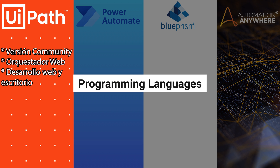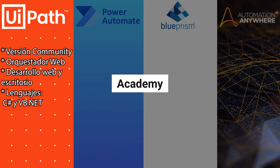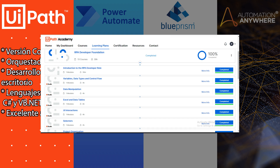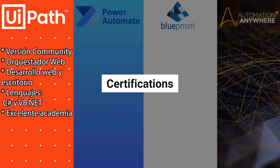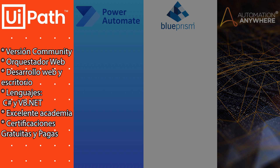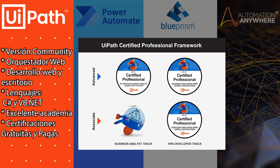Programming Languages: UiPath primarily supports C# and Visual Basic .NET as the main programming languages. If you want to create expressions or manipulate data, you need to use these programming languages. Academy: They offer a comprehensive Academy with functional and technical courses, all free. Certifications: UiPath provides free certification for completing their courses, but if you want an official developer certification, you will need to pay for that.